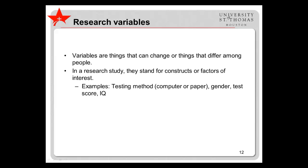Variables are things that can change or things that vary among people. In a research study, they stand for constructs or factors of interest — for example, testing method (computer or paper), gender, test score, or IQ. Anything that can have more than one value or type is a variable. For example, there are many types of ethnicity, so ethnicity could be a variable. However, one type is not a variable in itself — Asian American, for example, is not the variable per se; it is a person's status on the variable ethnicity.